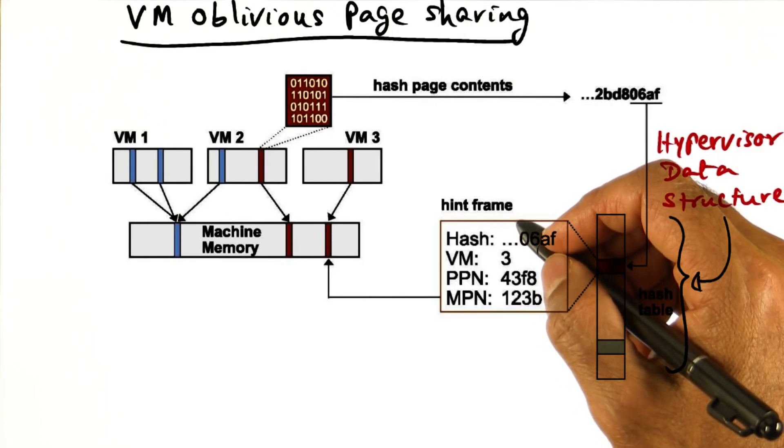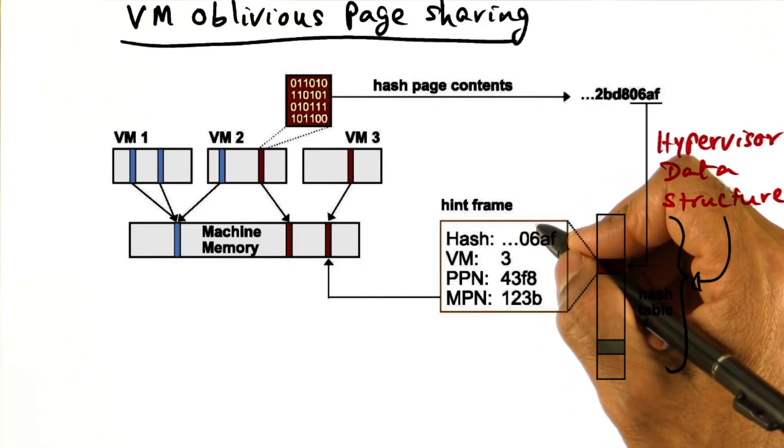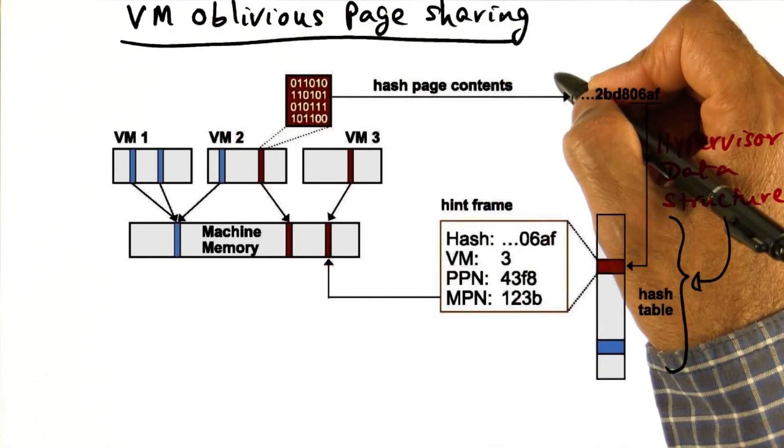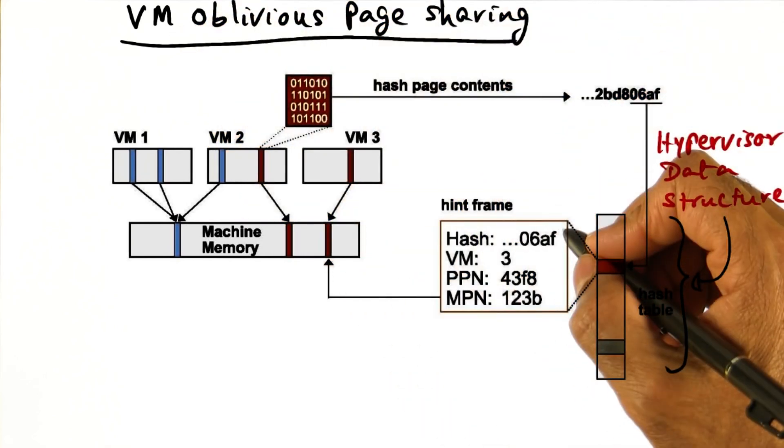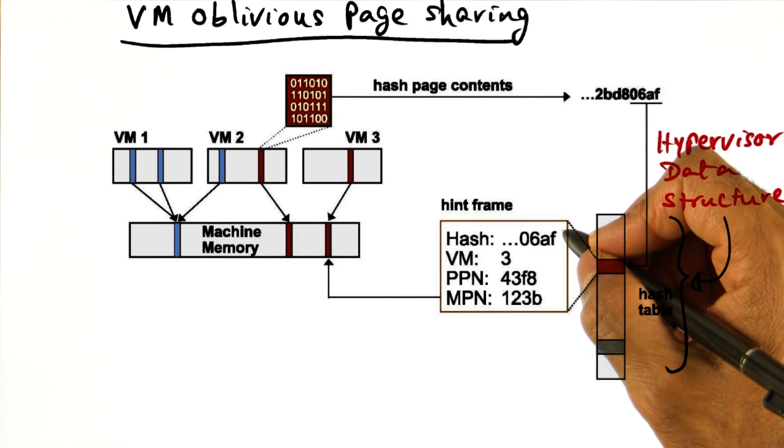An alternative is to achieve the same effect but completely oblivious to the guest operating system. This is used in VMware's ESX server.